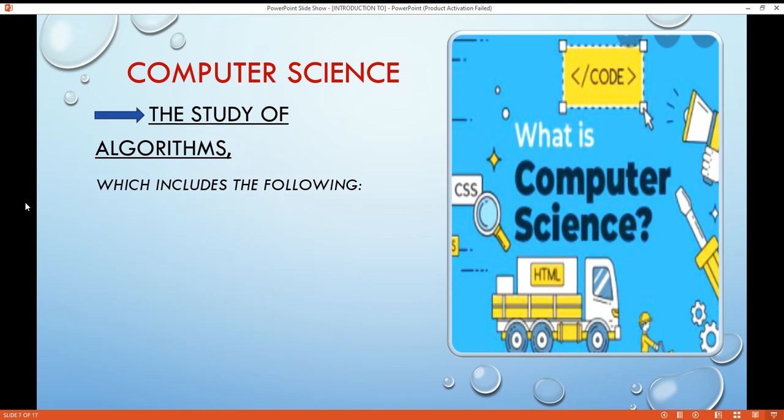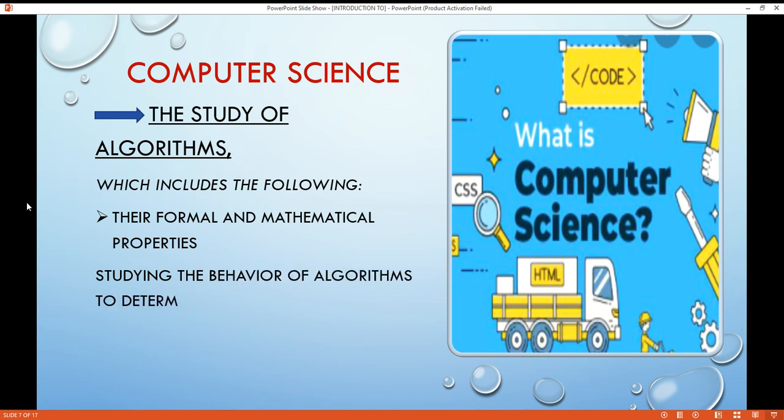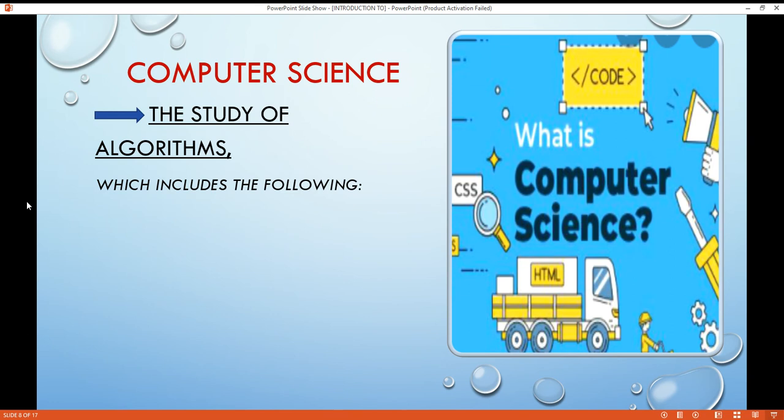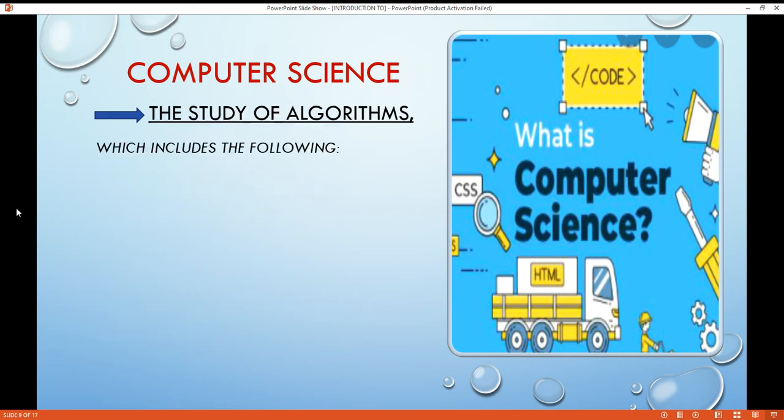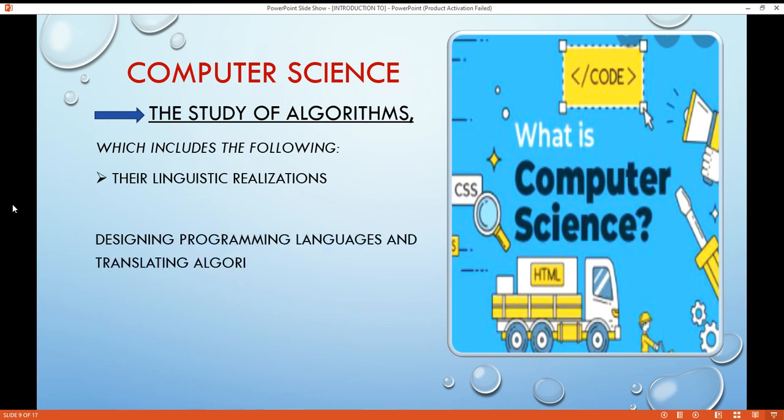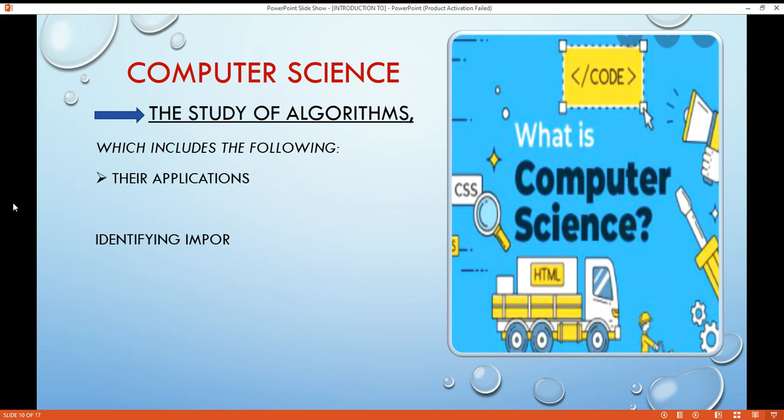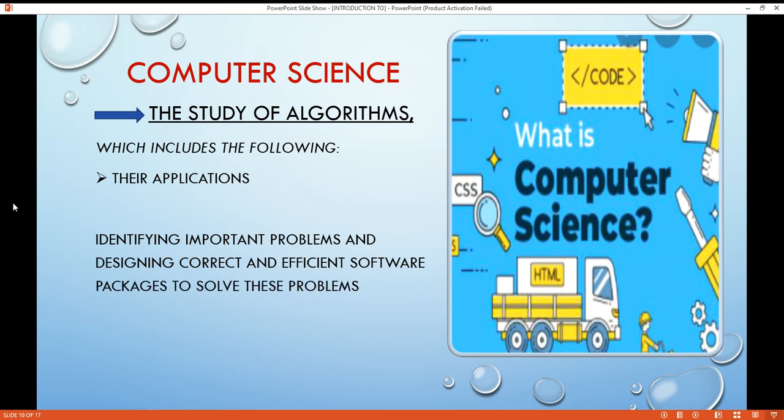Let's see to it one by one. Studying the behavior of algorithms to determine if they are correct and efficient, that's their formal and mathematical properties. Designing and building computer systems that are able to execute algorithms in their hardware realizations. Designing programming languages and translating algorithms into these languages so that they can be executed by the hardware in their linguistic realizations. Identifying important problems and designing correct and efficient software packages to solve these problems in their applications.